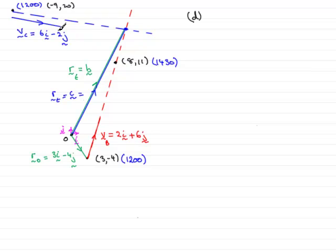And in part D, we've got to show that at the point of interception, the boats were moving with the same speed. So all we've got to do now is find the magnitude of both VC and VB and show